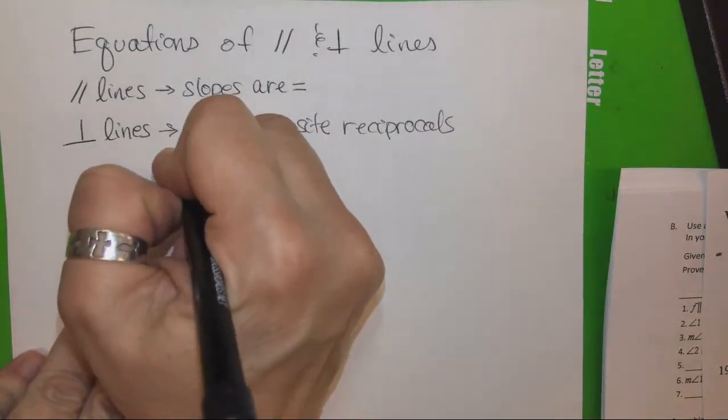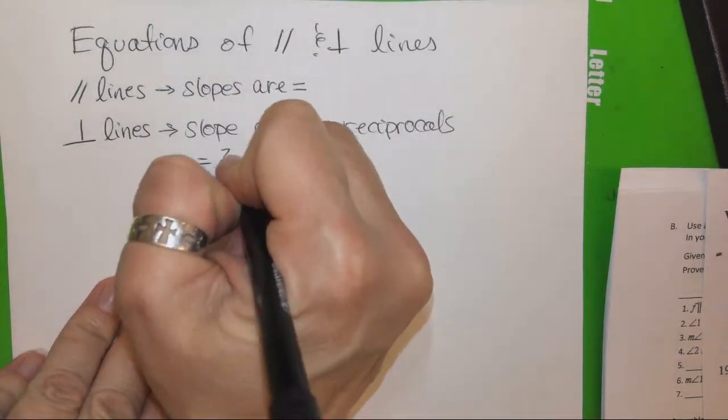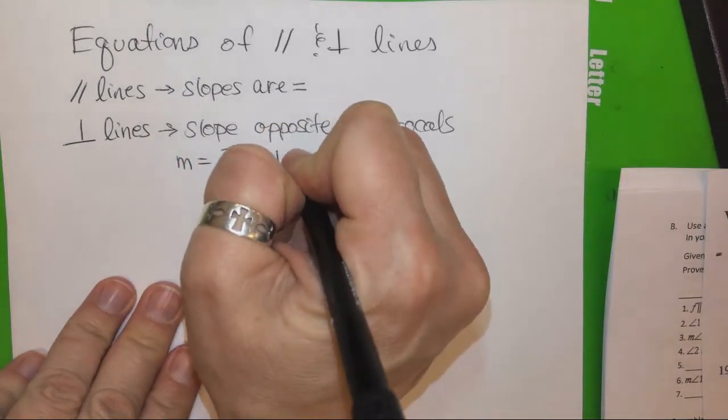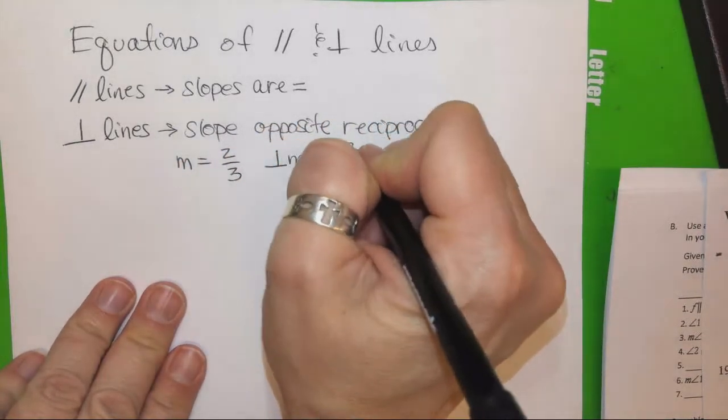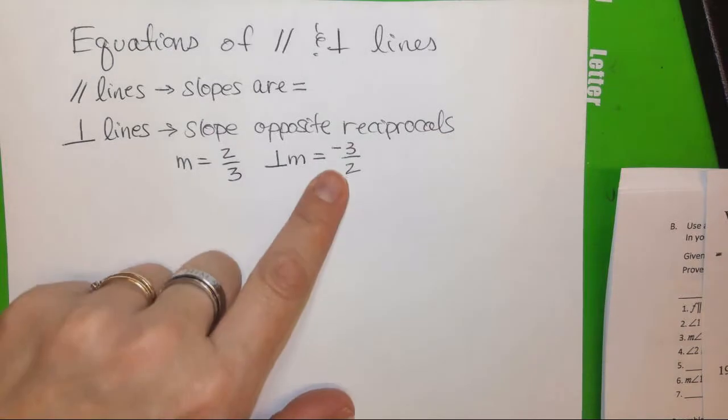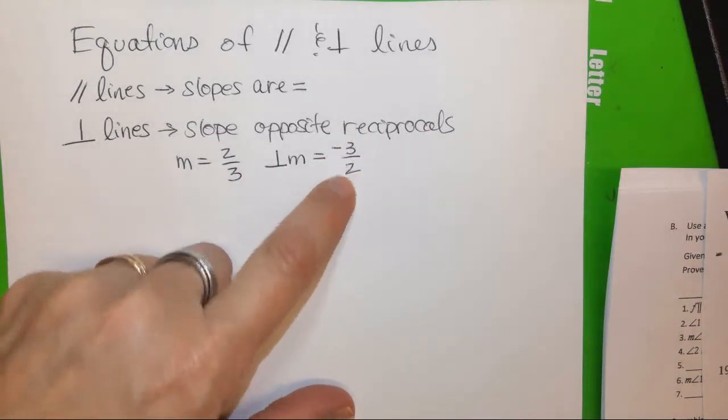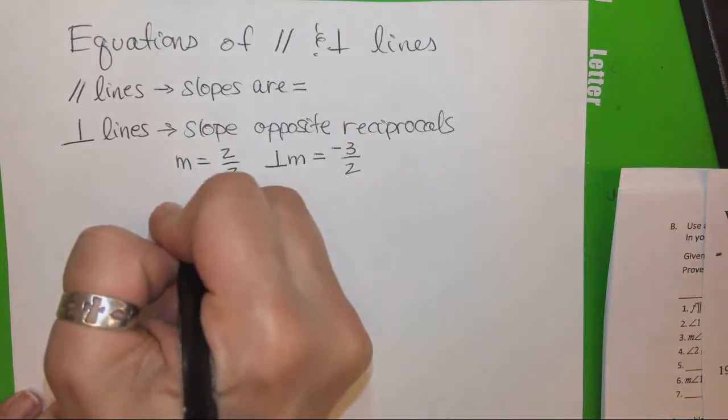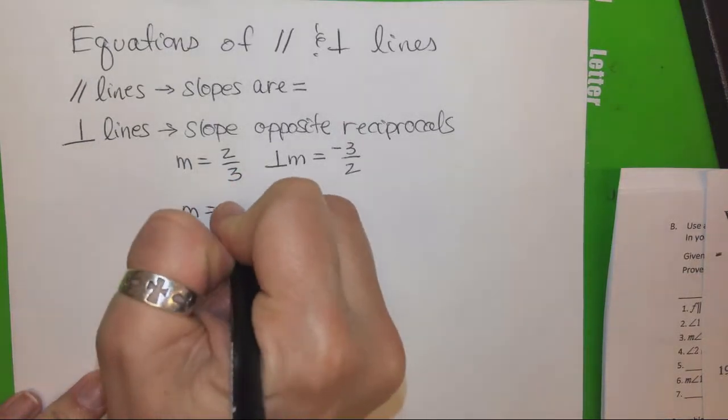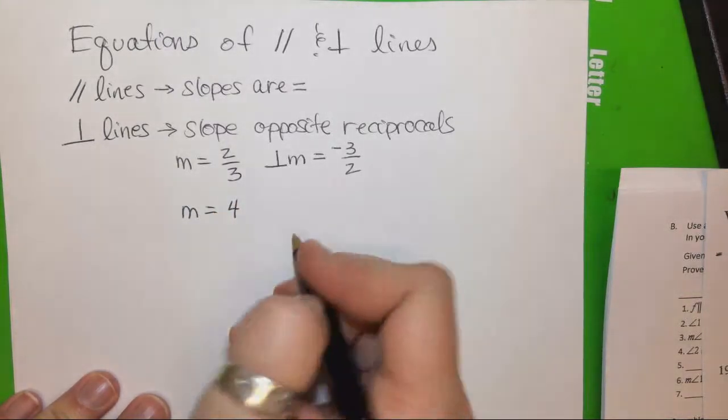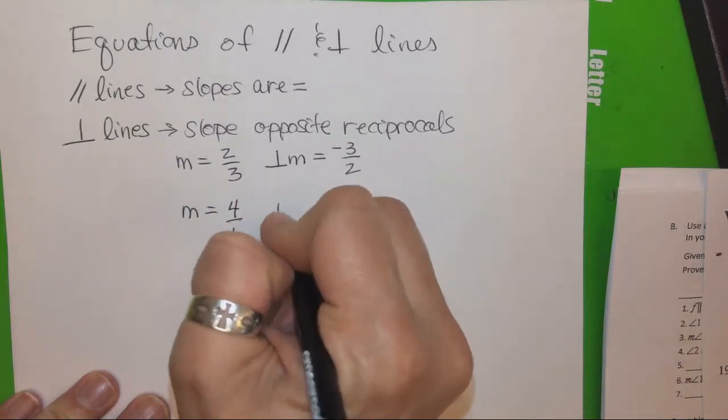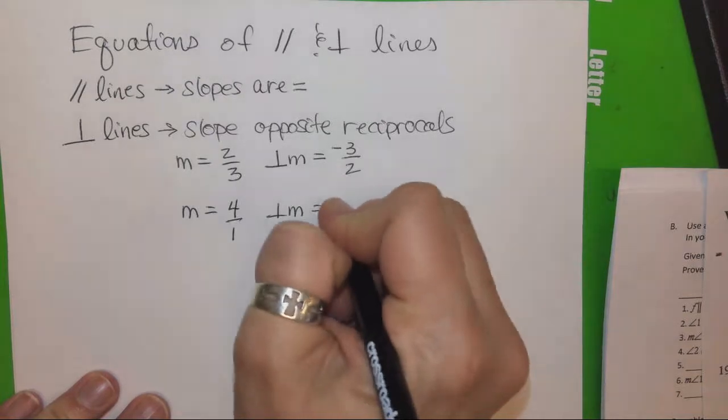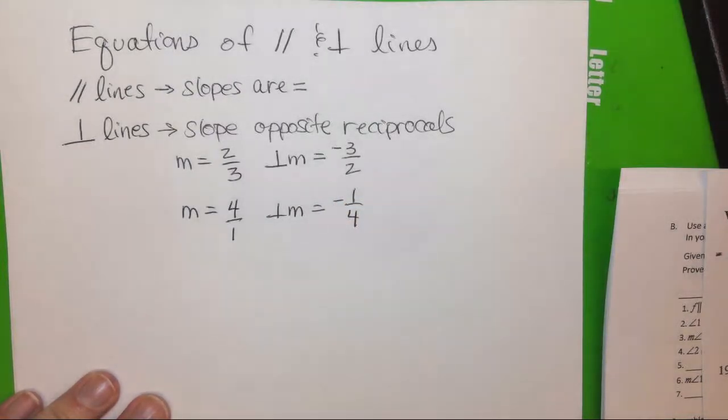So if we had one slope equal to two-thirds, then the perpendicular slope would be negative three-halves. If we take the opposite, the reciprocal of it is flip it upside down. So if I had a slope equal to four, or four over one, then a perpendicular slope would be negative one-fourth, right?